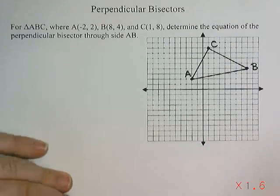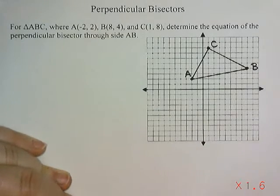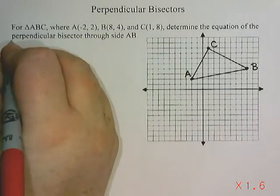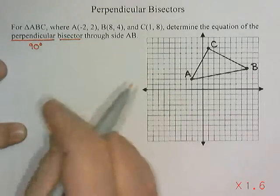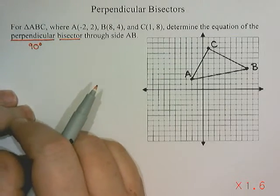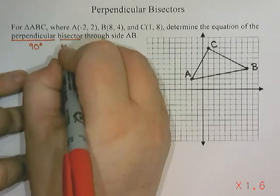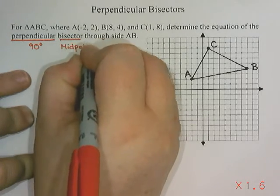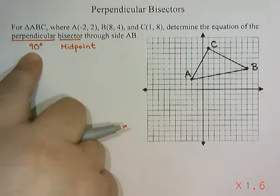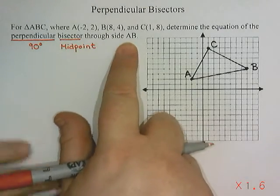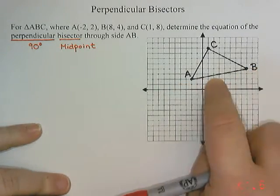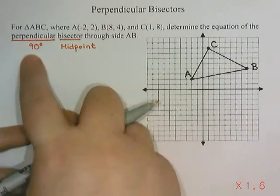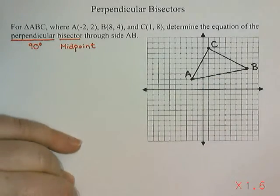A perpendicular bisector — the title tells you what it is. Perpendicular means 90 degree angle, so it's going to make a 90 degree angle with something. And bisector means cut in two, so something that cuts something in two would be the midpoint. So we're going to make something that goes through a midpoint at a 90 degree angle. Since we're going through side AB, we're going to make a line that goes through the halfway point at a 90 degree angle.